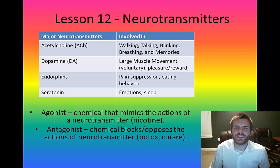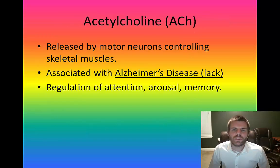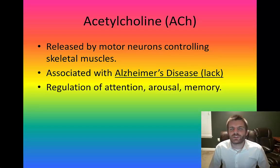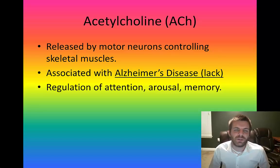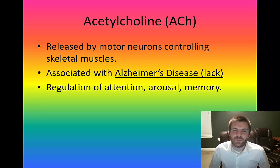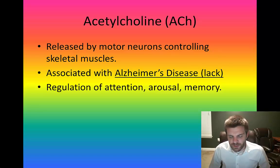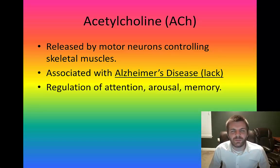Focusing on acetylcholine, abbreviated ACH — this is a neurotransmitter released by motor neurons that control your skeletal muscles. Its primary function deals with regulating attention, arousal, and memory, which is why nicotine acts as an agonist for it. A lack of acetylcholine has been linked with forms of dementia, particularly Alzheimer's disease. Imbalances in acetylcholine levels are also believed to contribute to twitching and paralysis.